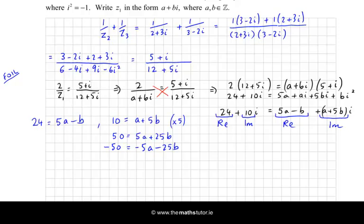Now we just combine that with the other equation. So let's write over here, 24 equal to 5a minus b minus 50 is equal to minus 5a minus 25b. So we add those two together, and these cancel. And I get minus 26 is equal to minus 26b. Therefore, b is equal to 1.